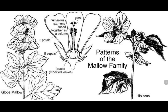The bracts are nothing other than modified leaves, and these are bracteoles — bractate. The petals and sepals are pentamerous and all are free, not fused, so we call this polypetalous or polysepalous because all are free, and we have monadelphous stamens.